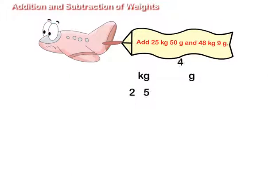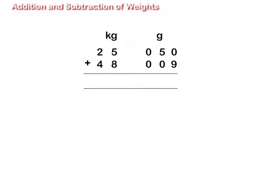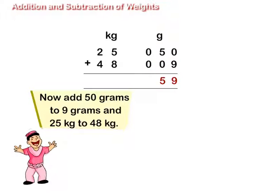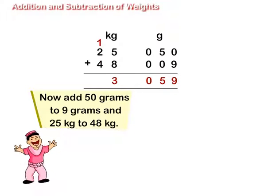Add 25 kg 50 g and 48 kg 9 g. Write values of kg and g in column form. Write g in 3 digits: 50 g as 0, 5, 0 g and 9 g as 0, 0, 9 g. Now add 50 g to 9 g and 25 kg to 48 kg.